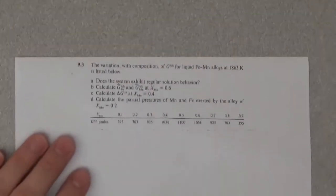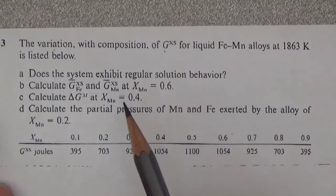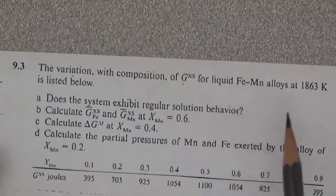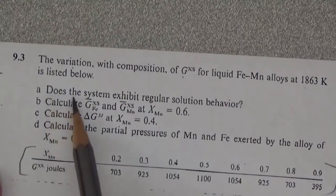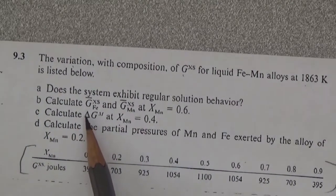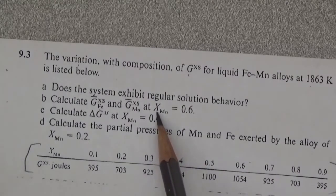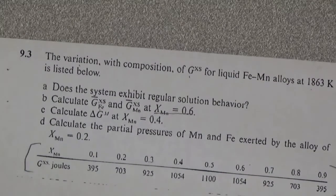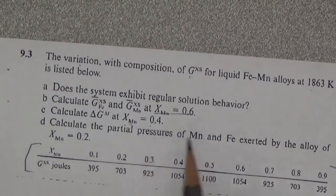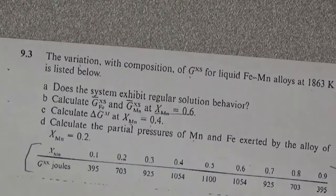Problem 9.3 has got a bunch of parts. The variation with composition of the excess Gibbs free energy for liquid iron-manganese at 1863K is given. We need to: determine if the system exhibits regular solution behavior, calculate the partial molar excess free energy for iron and manganese at x_Mn=0.6, calculate the total molar Gibbs free energy of mixing at x_Mn=0.4, and calculate the partial pressure of manganese and iron when x_Mn=0.2.